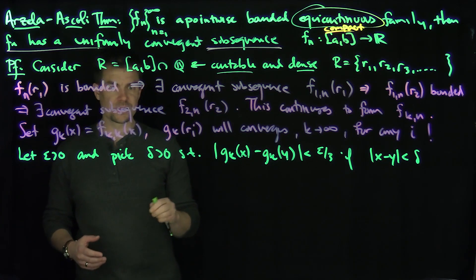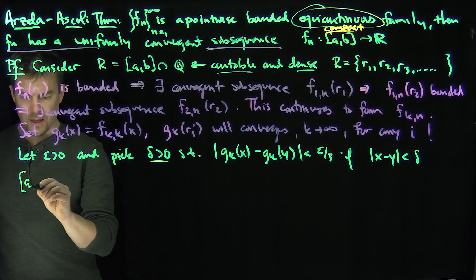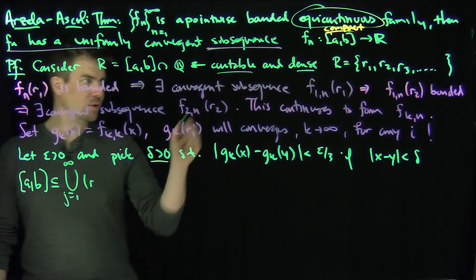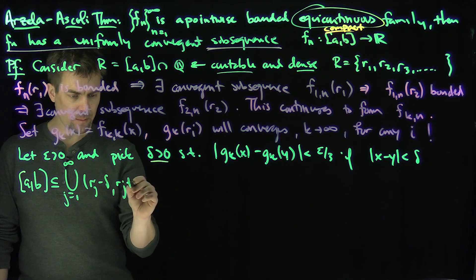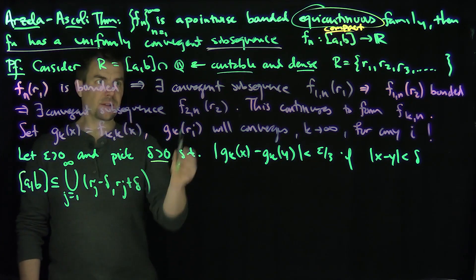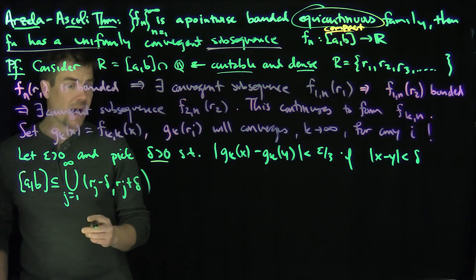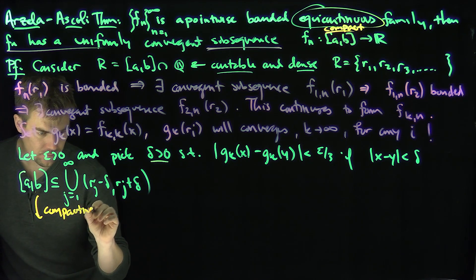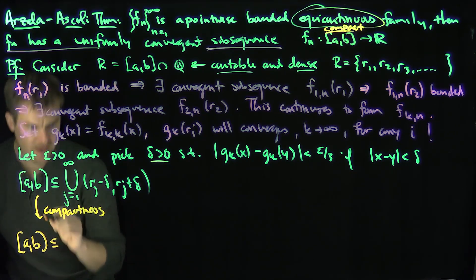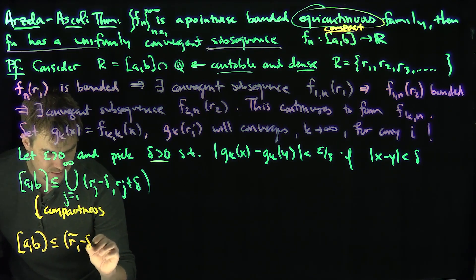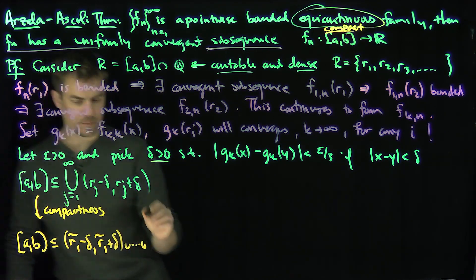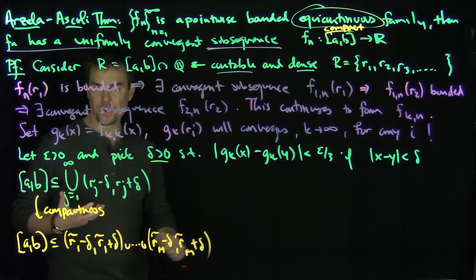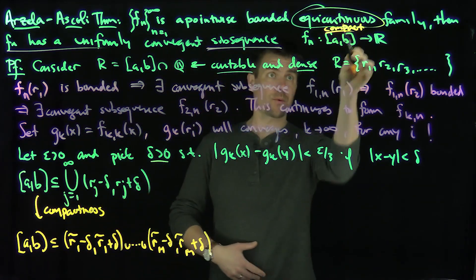Now since delta is specified, I'm going to write that [a, b] is contained in the union over j from 1 to infinity of the intervals (Rj - delta, Rj + delta). Clearly, because I have a dense subset, putting down these intervals will cover the set. Now by compactness — this is the important part, we haven't used compactness yet — by compactness there's a finite subcover. That tells me [a, b] is contained in (R̃1 - delta, R̃1 + delta) up to (R̃m - delta, R̃m + delta). That's where we use compactness: every open cover of a compact set has a finite subcover. So I've used equicontinuity and compactness.